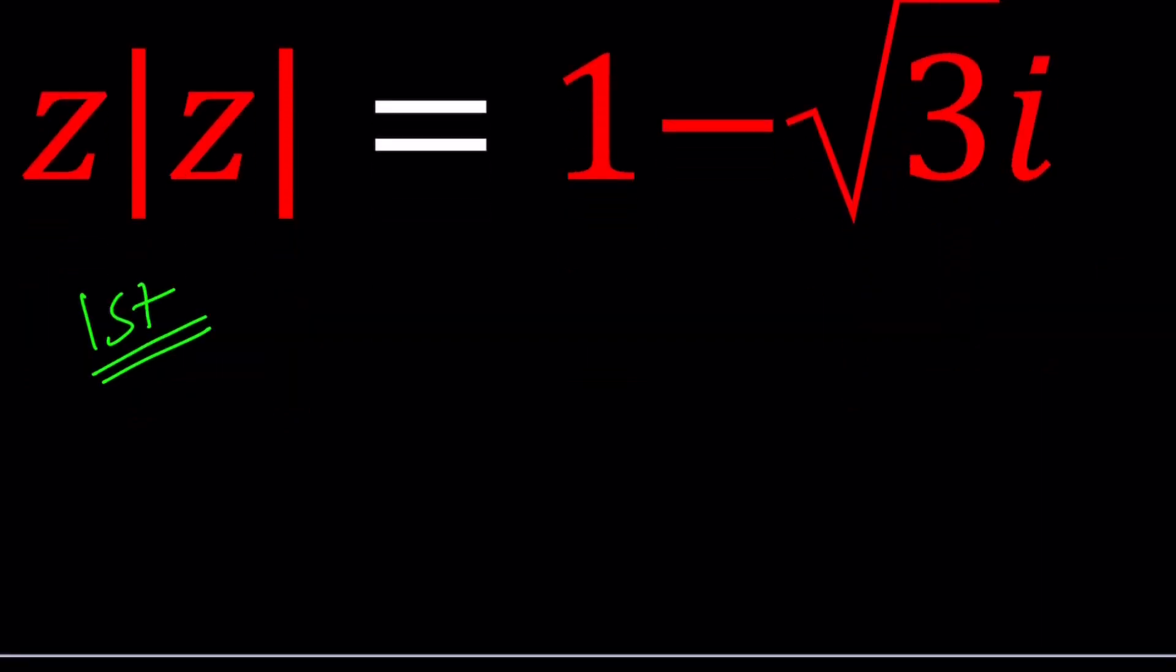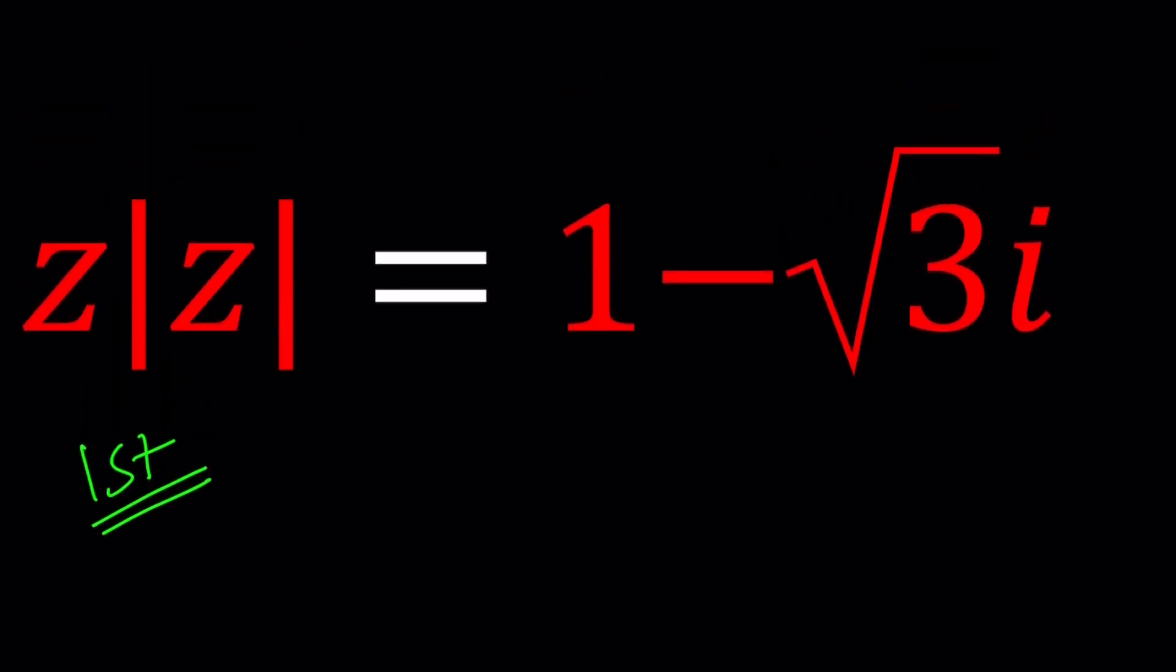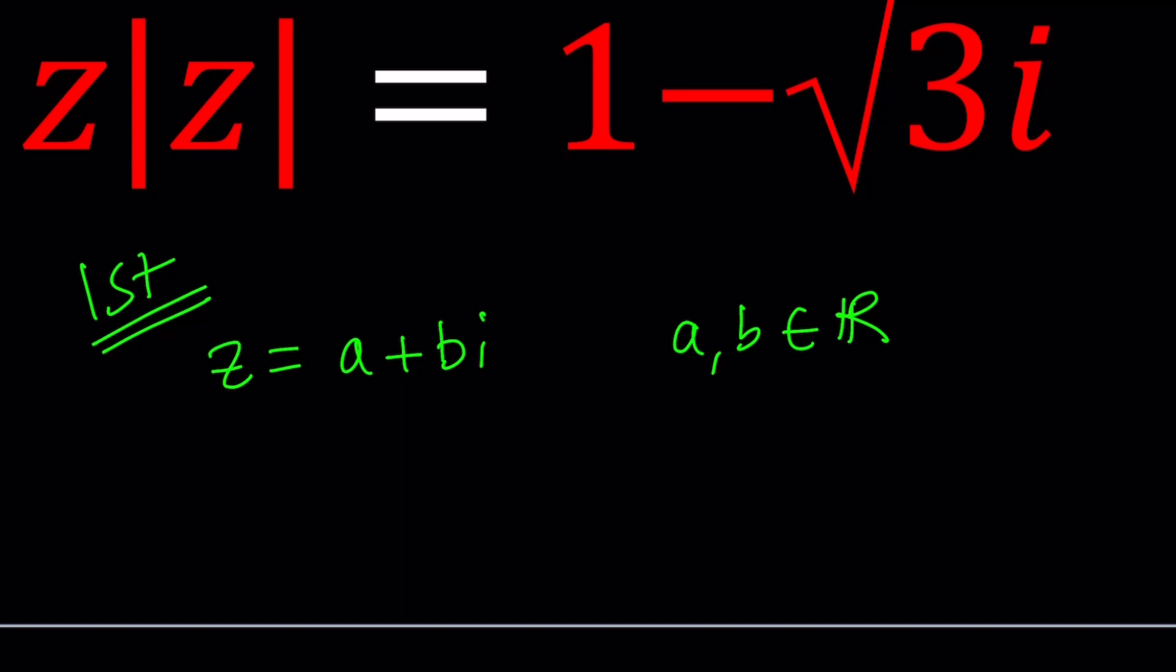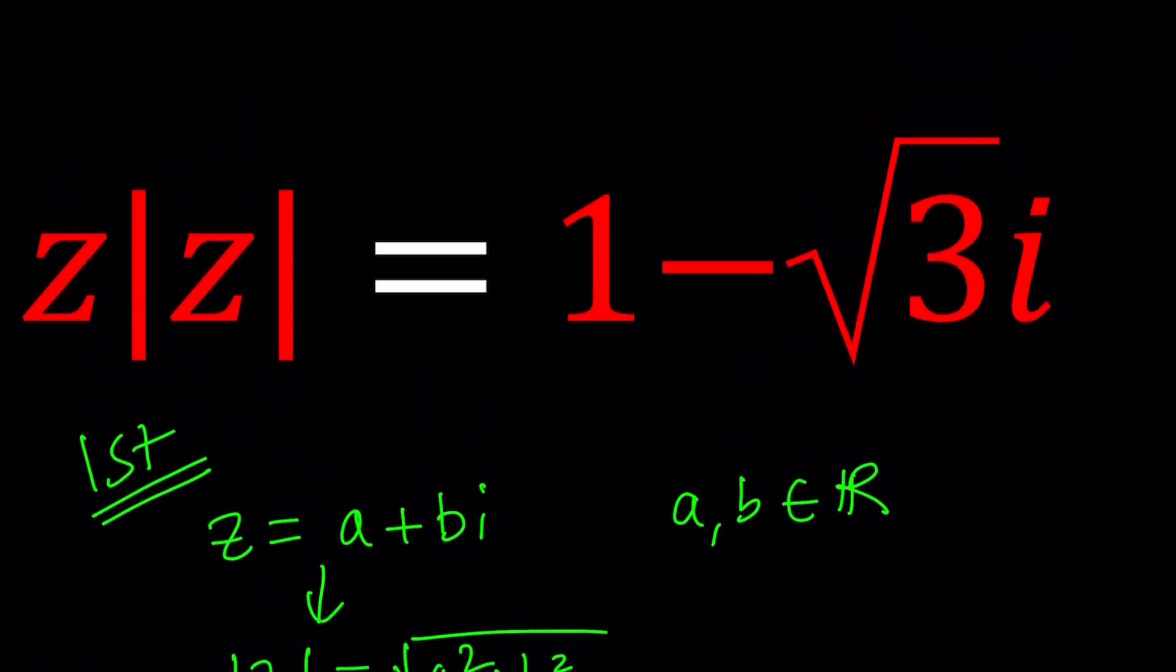So for my first method, I'm just going to do the usual, and assume that since Z is a complex number, it can be written in standard form as A plus BI, where A and B are real numbers. This distinction is important, we need to make sure A and B are reals. Now, we're going to find the absolute value from here, which is the square root of A squared plus B squared. Now we're going to plug these into our equation, set it equal to 1 minus square root of 3 times I, and then solve for A and B.